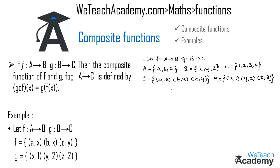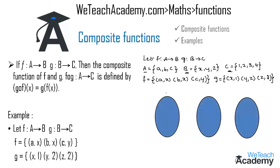Let us draw three circles for A, B, and C and write the elements: set A contains a, b, c; set B contains x, y, z; and set C contains 1, 2, 3, and 4.